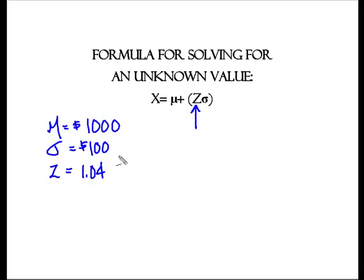Here we are back at the magic formula. Remember we said that we knew the mean of the distribution was equal to $1,000. We were given the standard deviation equal to $100, and now I know what the Z value is: Z equals 1.04. Plugging into this magic formula lets me know that the unknown value of X that represents the top 15% of the data is equal to $1,000 plus 1.04 times the value of the standard deviation of 100.